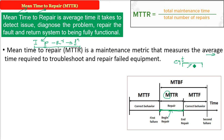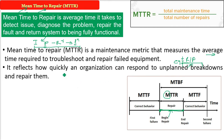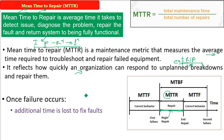MTTR equals total maintenance time divided by the total number of repairs. It is an indicator for any organization of how it responds to unplanned breakdowns and repairs them. For example, if there is an electricity problem, it could be from the pole, the transformer, or the hydroelectric source — the time to repair will be different depending on the type of problem.